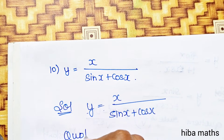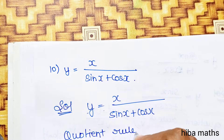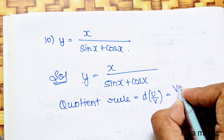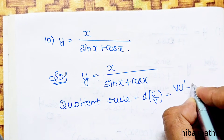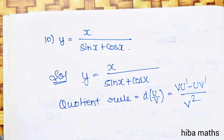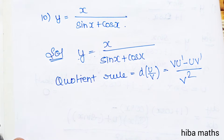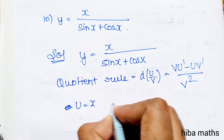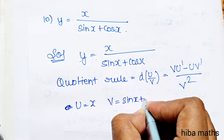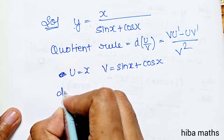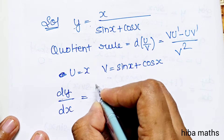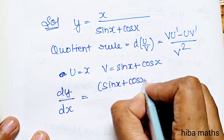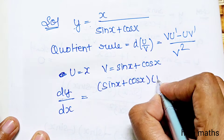Quotient rule: d/dx of (u/v) is equal to (v·u' minus u·v') divided by v square. Here, u is equal to x and v is equal to sin x plus cos x. So dy/dx is equal to (sin x plus cos x) times u' — differentiating x gives 1.